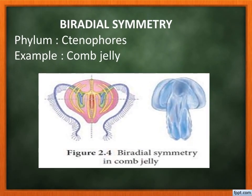Biradial symmetry means two equal halves can be obtained in only two directions. Example: comb jelly. If we divide it in only two axes — one longitudinal sagittal axis (head to tail) and one longitudinal vertical axis (left to right) — we get two equal halves. This is called biradial symmetry.